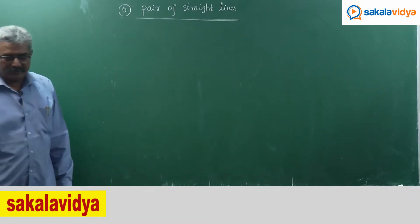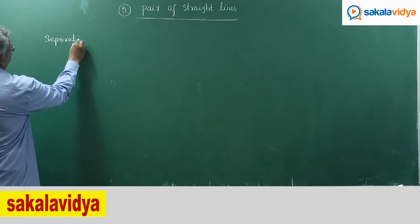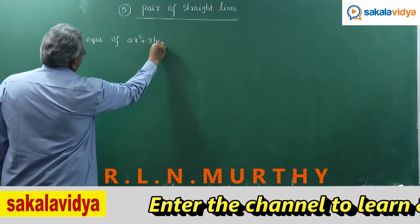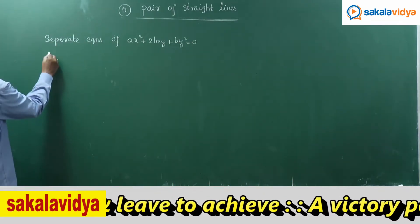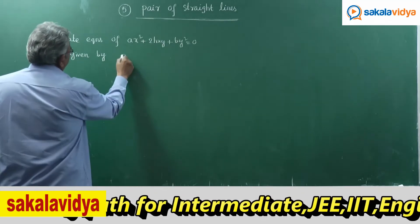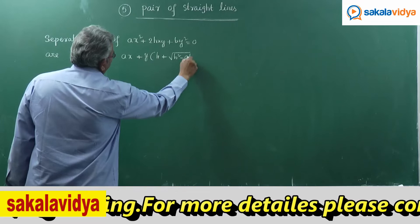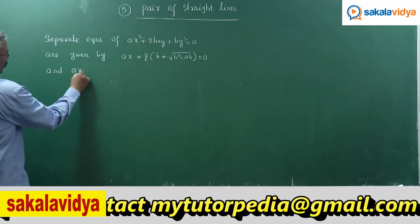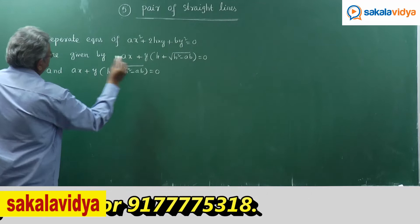Let me revise the separate equations. The separate equations of Ax² + 2hxy + by² = 0 are given by (Ax + y(h + √(h² - Ab)) = 0) and (Ax + y(h - √(h² - Ab)) = 0). This is an important point.